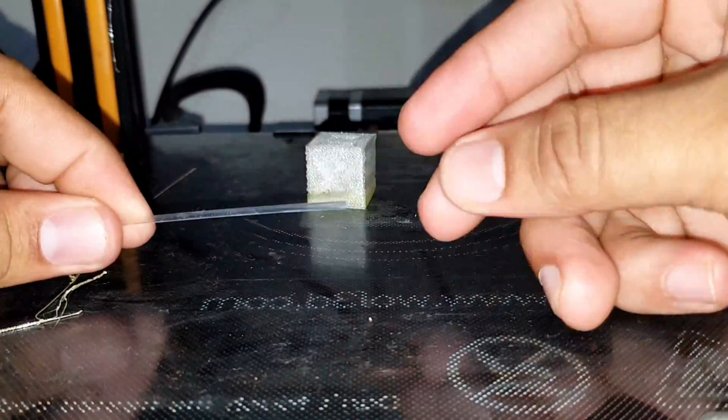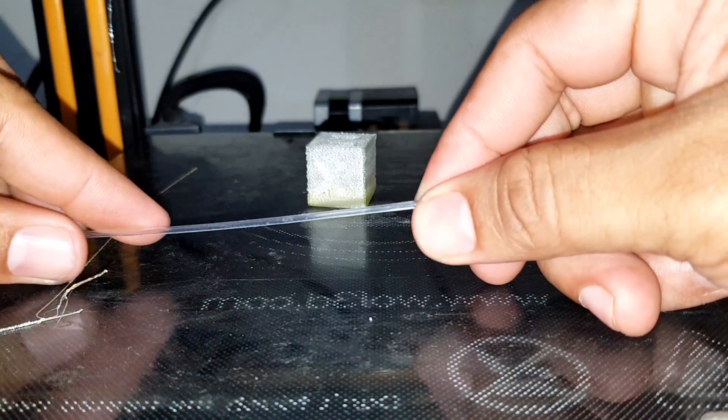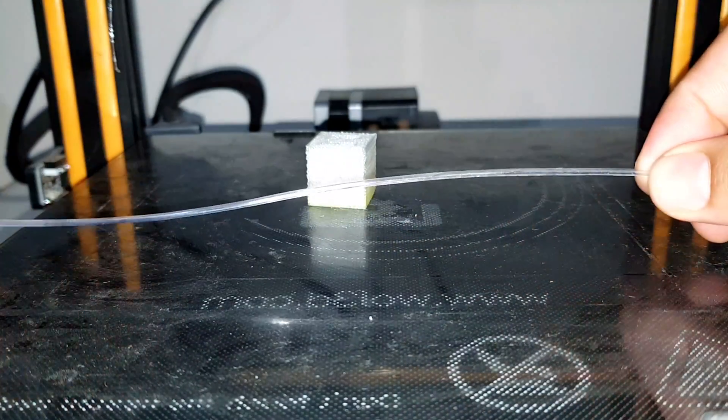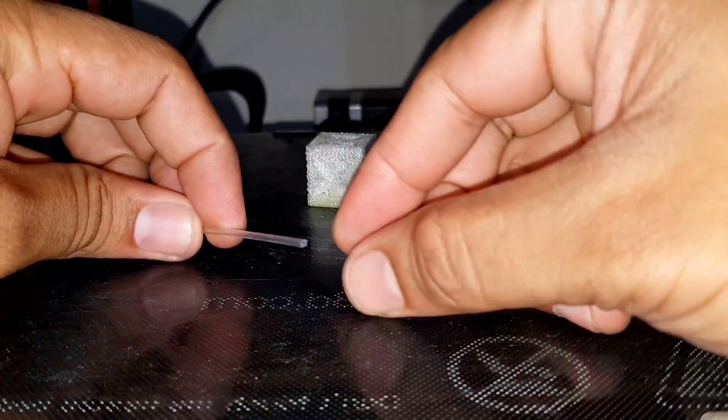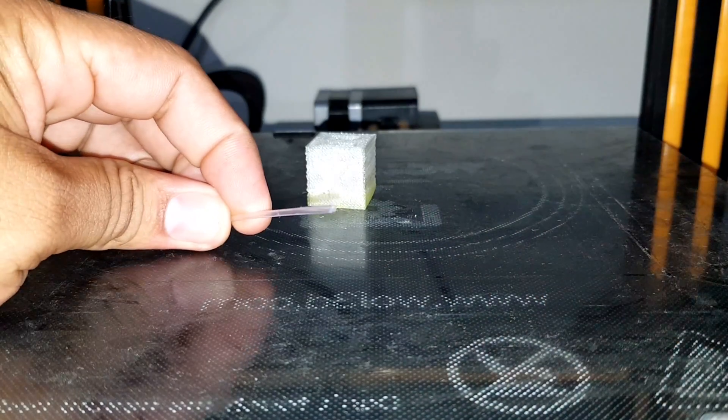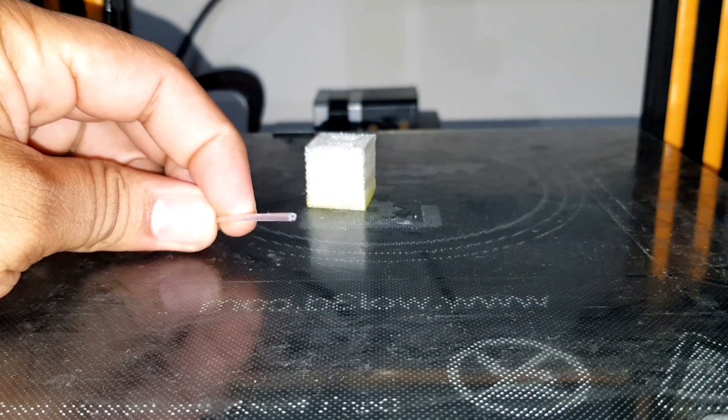As you can see, the filament made this way is slightly hollow inside, which must be compensated by increasing flow rate of the nozzle.